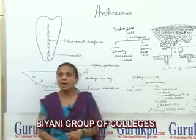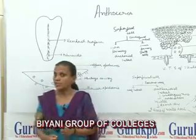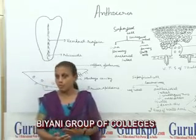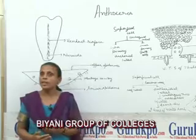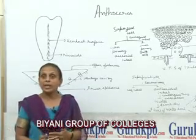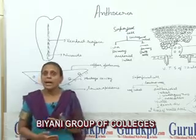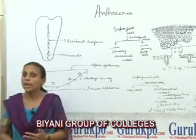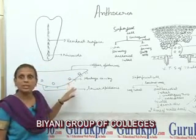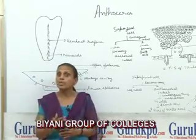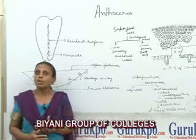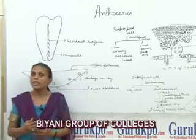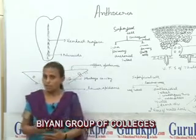Now I move towards vegetative propagation in Anthoceros. It occurs by means of progressive death and decay of the thallus, or by means of tubers. Tubers are the perennating organs — they store food material, and during unfavorable conditions these are formed. When favorable conditions arrive, the tubers detach from the parent plant to give rise to a new thallus. Now, as you see in the diagram, there are also cushion-like structures formed on the dorsal surface of the thallus. These gemmae also detach from the parent plant and give rise to a new thallus on the approach of favorable conditions.